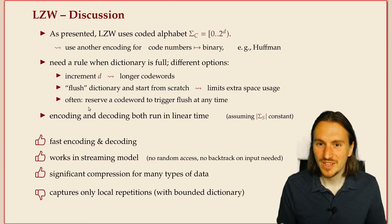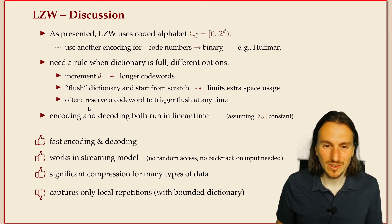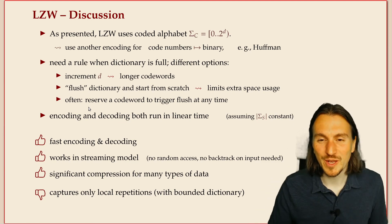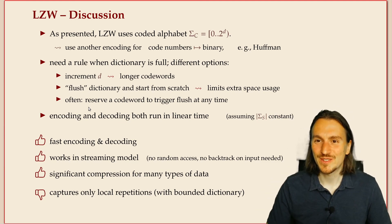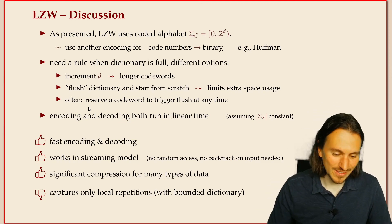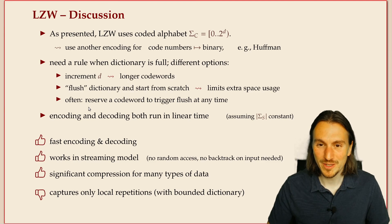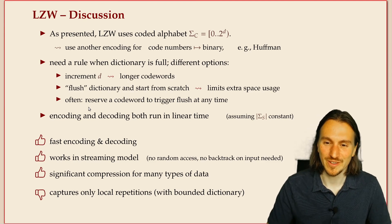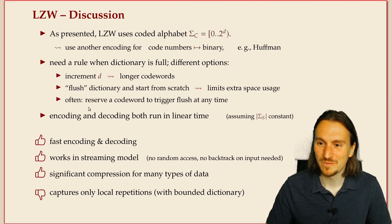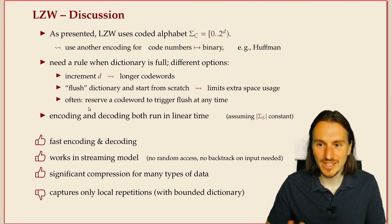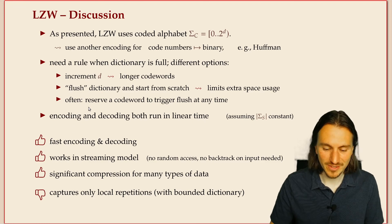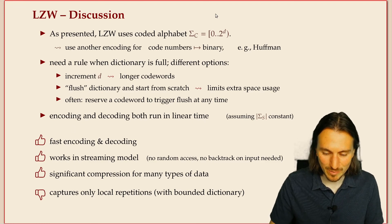LZW achieves very good compression for many typical kinds of data. For English or natural language text, and for biological sequences, it often achieves reductions of more than a factor of two. A downside: if a repetition is very far spread out in the input and you flushed your dictionary before seeing it again, you won't catch it.